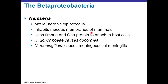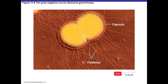Neisseria is another pathogenic Beta Proteobacteria member — a non-motile aerobic diplococcus that inhabits mucous membranes of mammals and uses fimbriae and Opa protein to attach to host cells. Neisseria gonorrhoeae causes gonorrhea and Neisseria meningitidis causes meningococcal meningitis. A scanning electron micrograph shows this gram-negative diplococcus with capsule, fimbriae, and Opa protein that together facilitate host cell attachment.